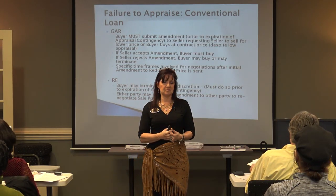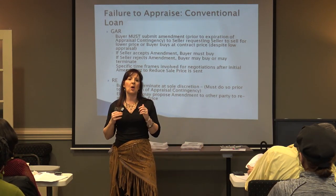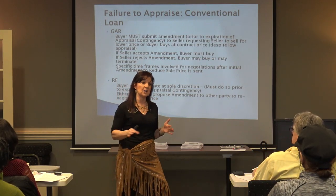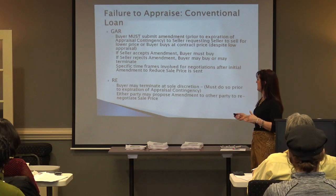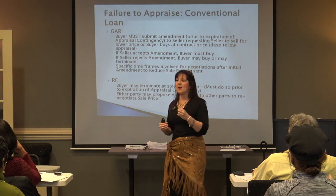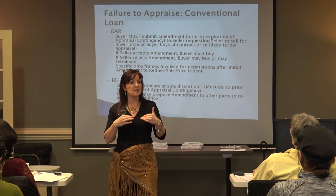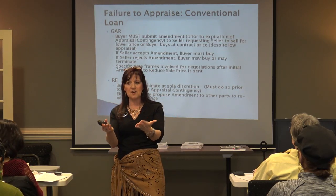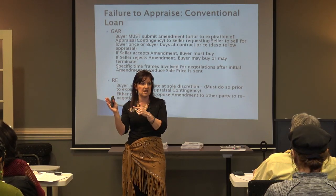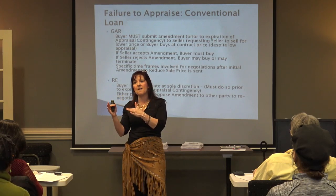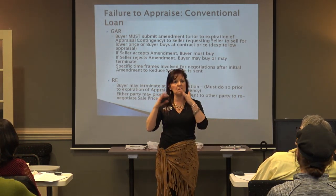Appraisal contingency. If a buyer is getting a conventional loan and goes binding under the GAR contract, you have to use the separate conventional loan contingency exhibit. In the RE forms, you go binding under the RE forms purchase and sale agreement for a conventional loan — no other documentation is needed as long as you fill it out properly. If the property does not appraise for the contract price, in GAR the buyer is obligated to give the seller the opportunity to sell at the appraised price. The buyer must submit that amendment to the seller prior to whatever number of days negotiated for the appraisal contingency.